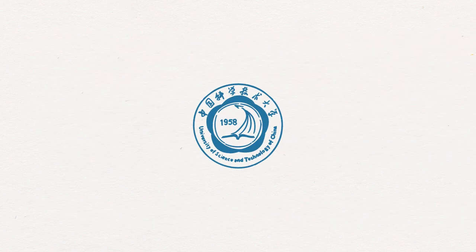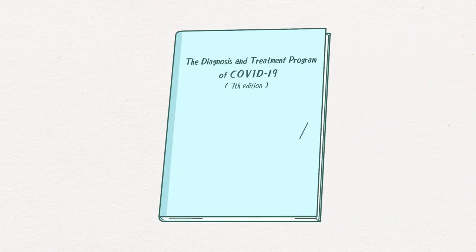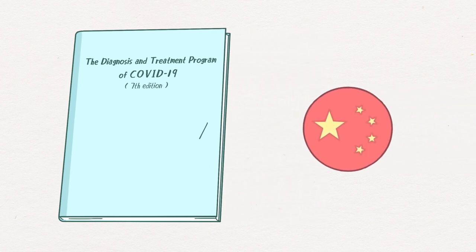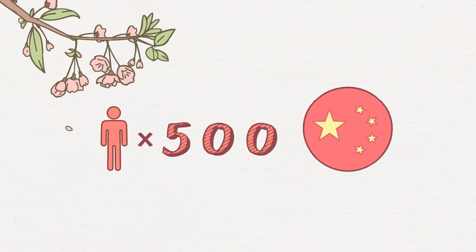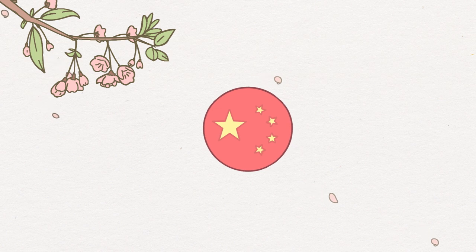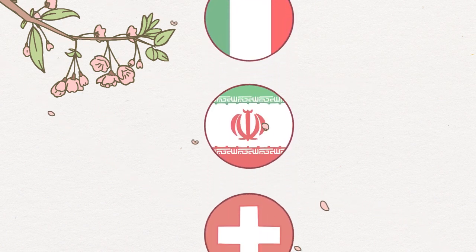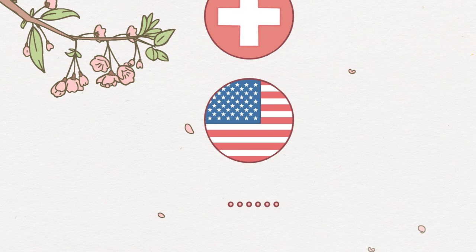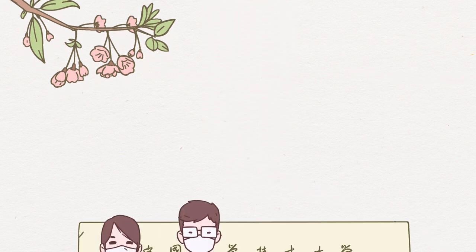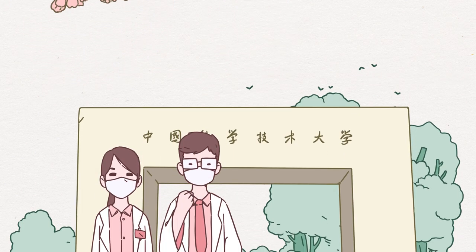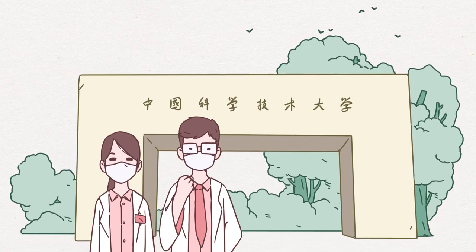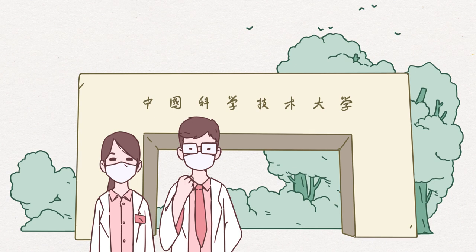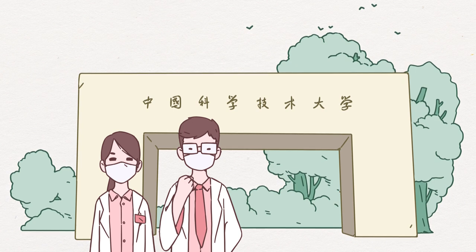USTC's plan of tocilizumab treatment has been formally included in the seventh edition of the Diagnosis and Treatment Program of COVID-19 of the National Health Commission of China since March 3, 2020, and nearly 500 severe or critical cases have been treated this way. At the same time, the tocilizumab treatment has also been adopted in Italy, Iran, Switzerland, USA, and many other countries. In the face of this sudden pandemic, scientific researchers are racing against time to save lives. Tocilizumab treatment developed from USTC has contributed to the fight against COVID-19.